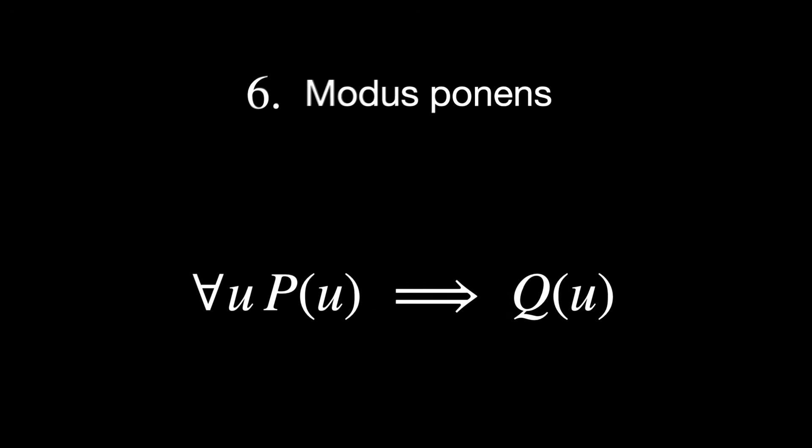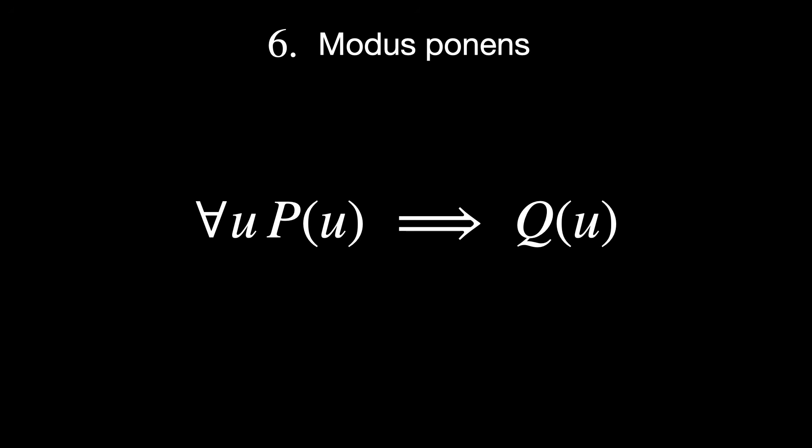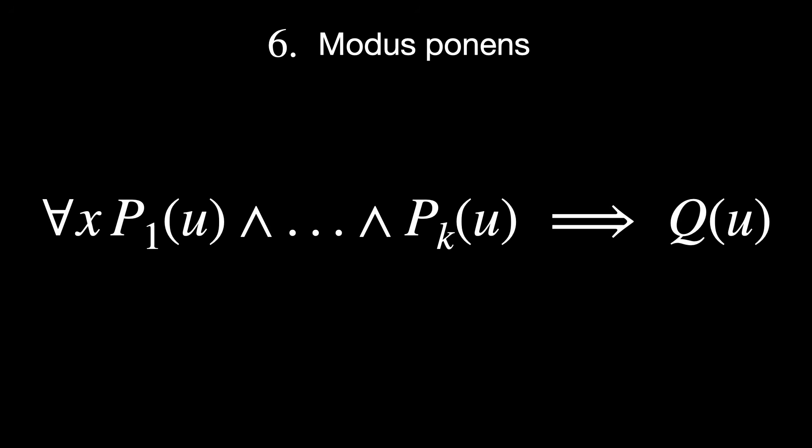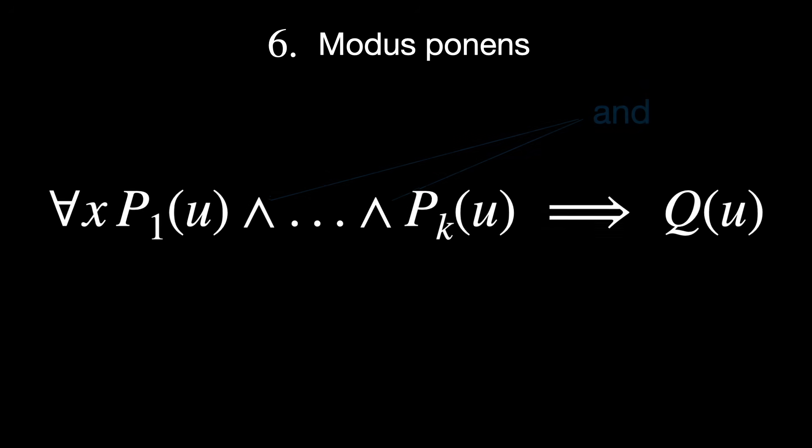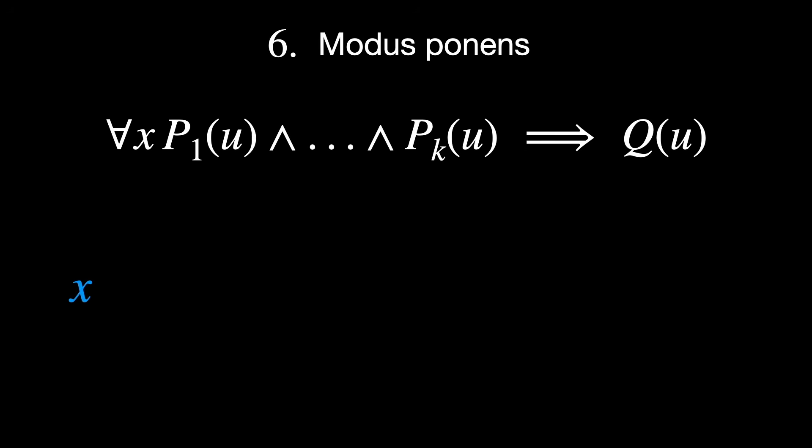Modus ponens. Whenever there is a hypothesis where conditions are assumed, it takes this form. Or more generally speaking, this form, where the wedge symbol means and. So this is saying that whenever you can find an x that can satisfy the condition P1(x) up to Pk(x), then you can give yourself the hypothesis Q(x).